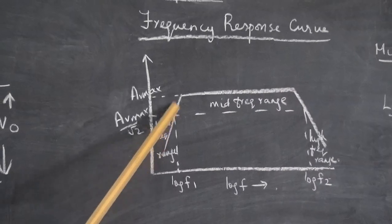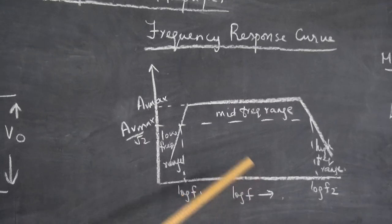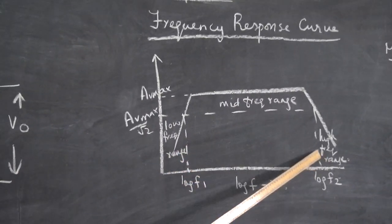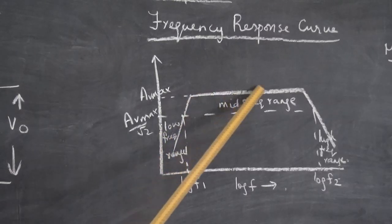Now this is the shape of the graph which you get when you plot a graph for the RC coupled amplifier. We can divide it into three parts: the mid frequency range where the gain is constant and maximum.